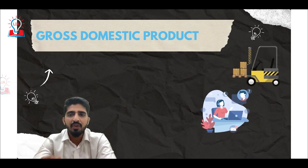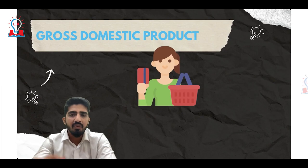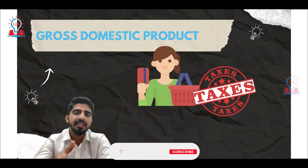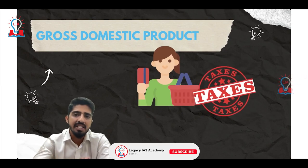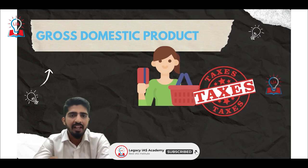GDP is just the sum of the total value of all the goods and services for which the consumer pays. It includes the taxes. So this is from the demand side, or the consumer side.